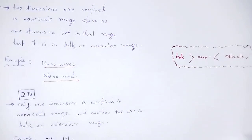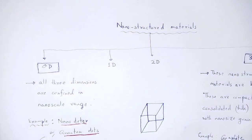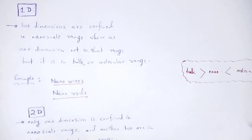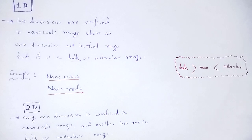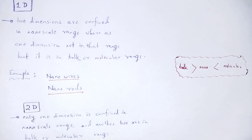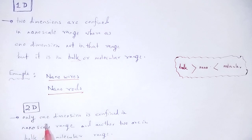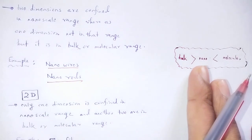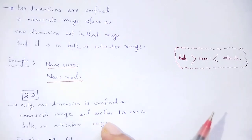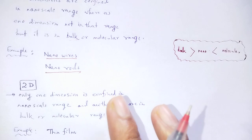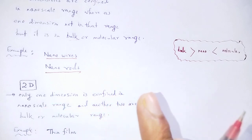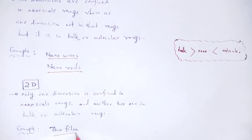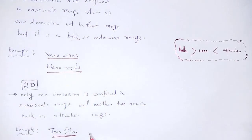Next, two-dimensional nanostructure material: only one dimension is confined in the nanoscale range and the other two are in bulk or molecular range. An example of a two-dimensional nanostructure material is a thin film.